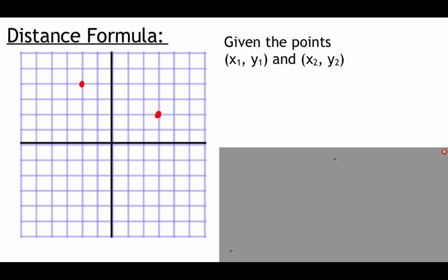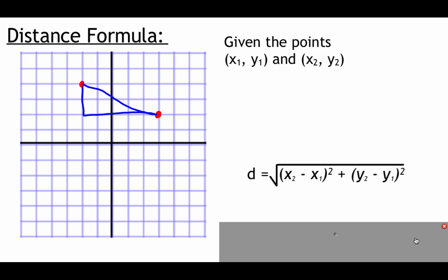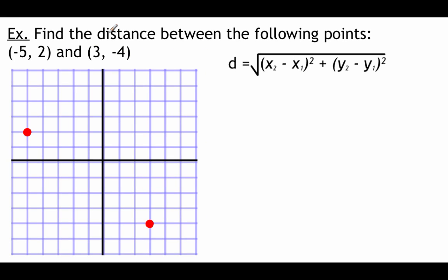Now that we've plotted some points, we're going to use our distance formula to find the distance between points. Given two general points (x₁, y₁) and (x₂, y₂), the distance formula is essentially the Pythagorean theorem extended to ordered pairs. The formula says: d equals the square root of (x₂ minus x₁) squared plus (y₂ minus y₁) squared. We subtract the x-values to find the horizontal distance, square it, then add the squared difference of the y-values for the vertical component — just like the Pythagorean theorem.